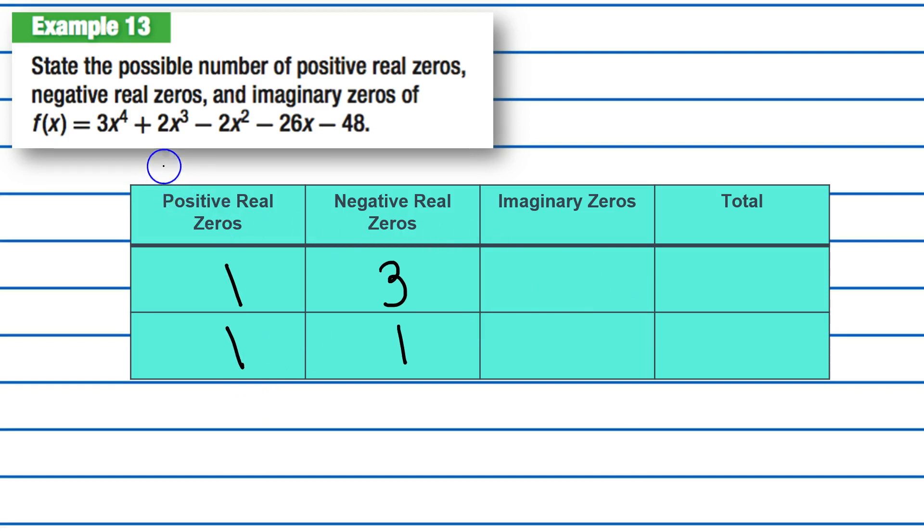Total amount of zeros, we have 4, because that's our highest degree. So 4 and 4. So it has to add up to be a total of 4. So 1 plus 3 is 4. Therefore, we would have 0 imaginary zeros. 1 plus 1 is 2. Plus 2 would give us our 4 imaginary zeros. And that's it.